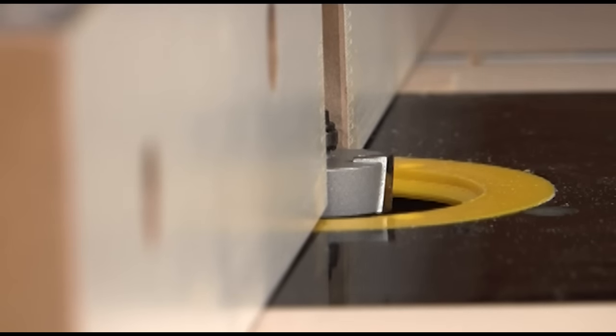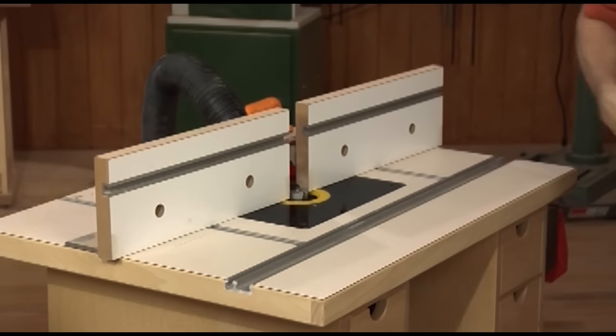When using a rabbeting bit on the router table, again set the bit height for the depth of the rabbet. Then set the bearing flush with the fence faces.